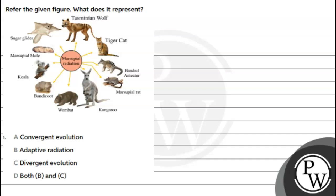Hello, let's read the given question. Refer the given figure — what does it represent? The options are: convergent evolution, adaptive radiation, divergent evolution, or both B and C.